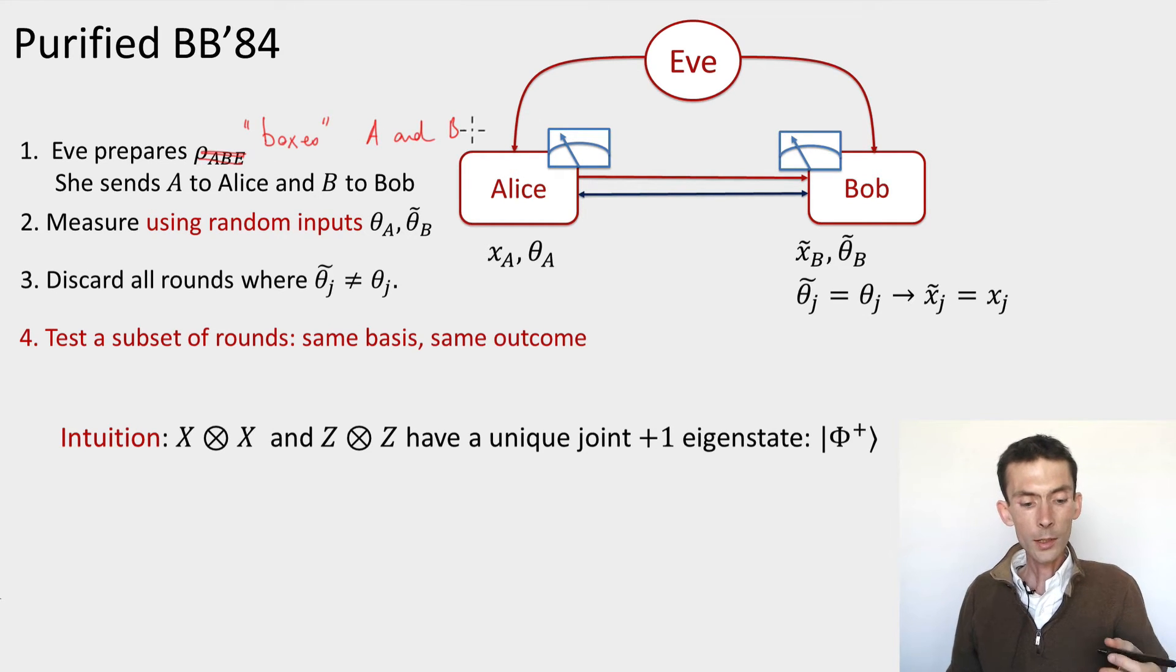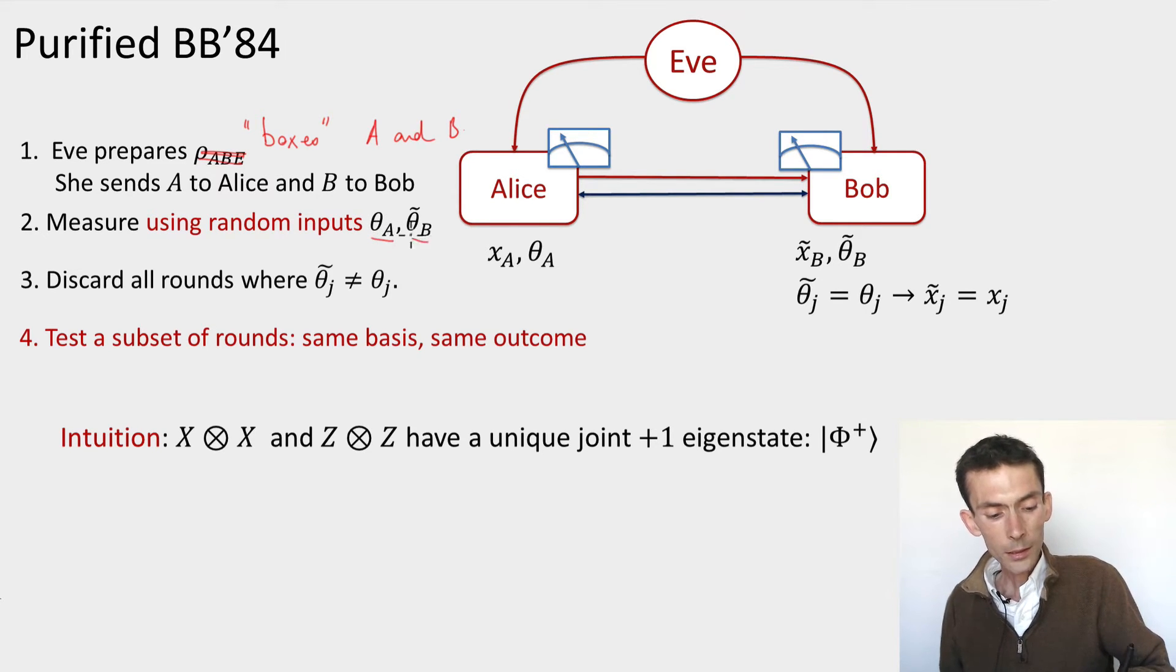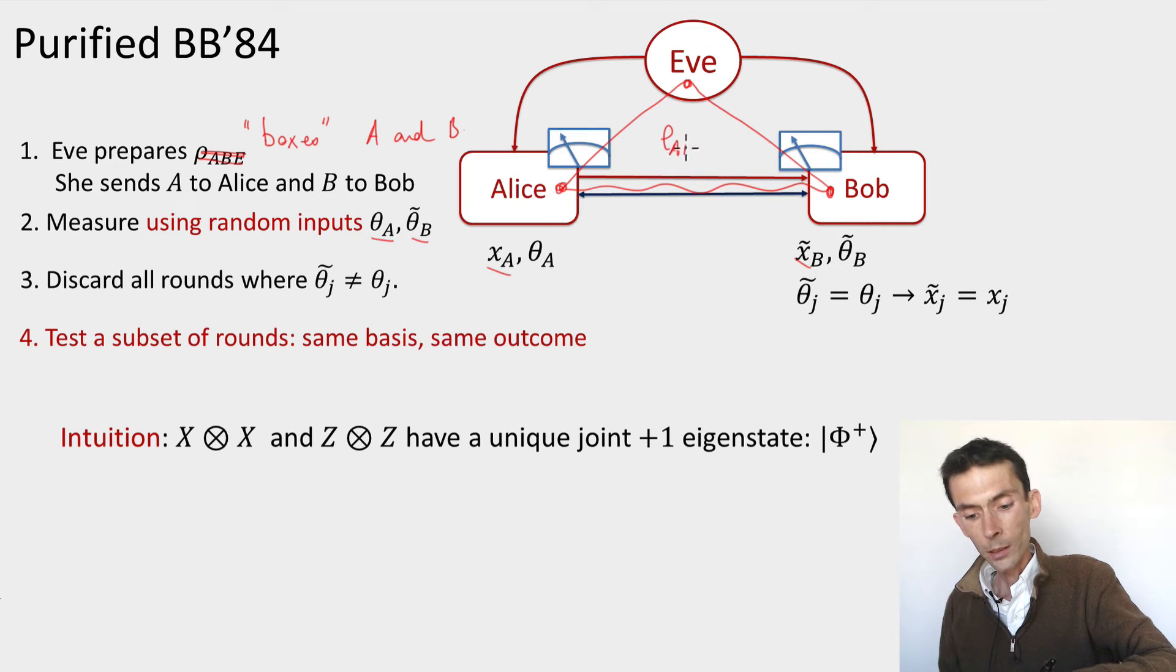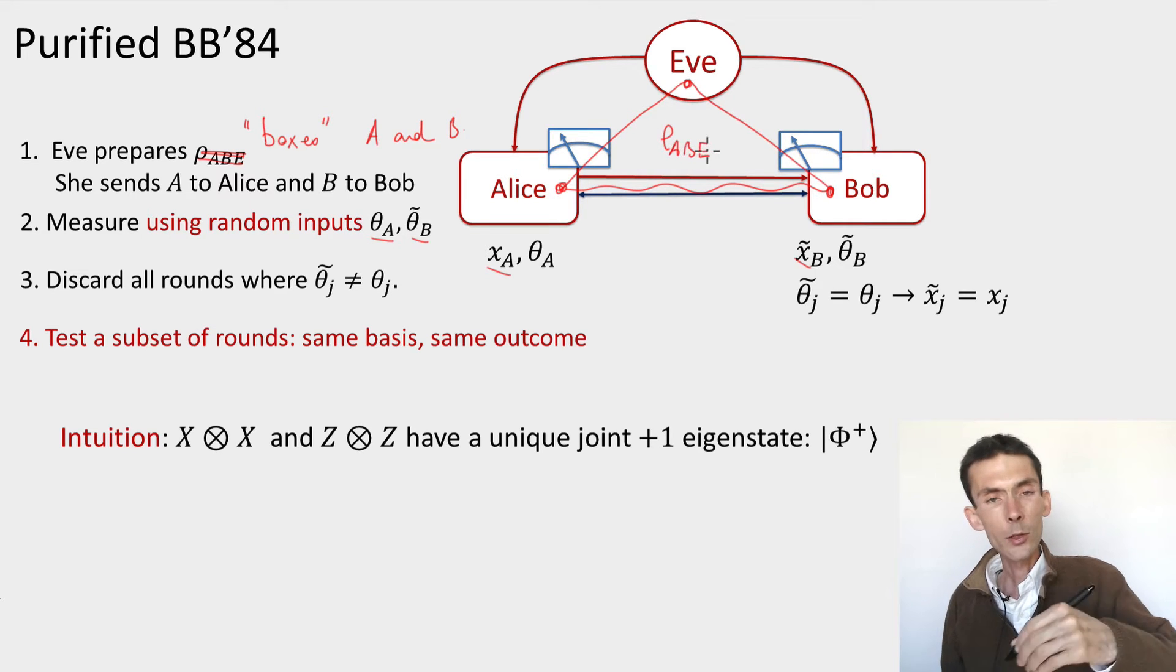Again, Eve is not going to prepare directly a state ρ_ABE, but instead what she's going to do is prepare boxes A and B that are given to Alice and Bob. And these boxes take inputs and they provide outputs. The inputs are called θ_A, θ_B. The outputs are called x_A, x_B. But now I no longer have a guarantee how these outputs were produced. Eve got to design not only an arbitrary state that's shared between Alice, Bob, and Eve, ρ_ABE. This is the state that's hidden inside the devices.